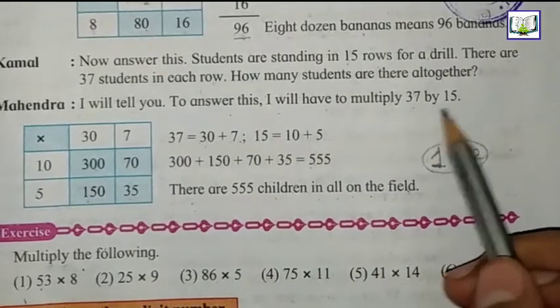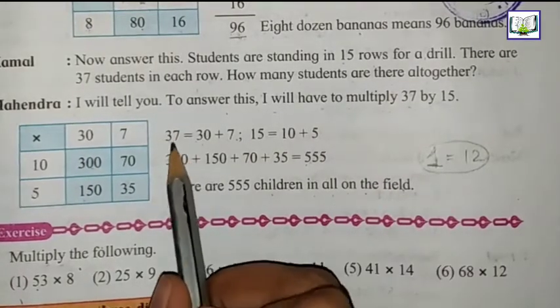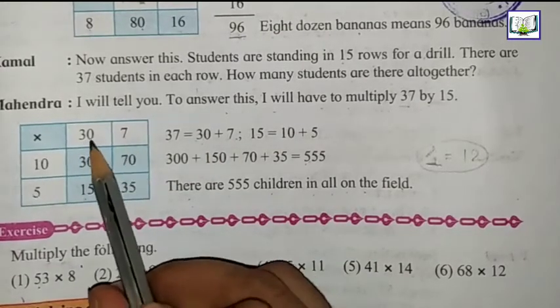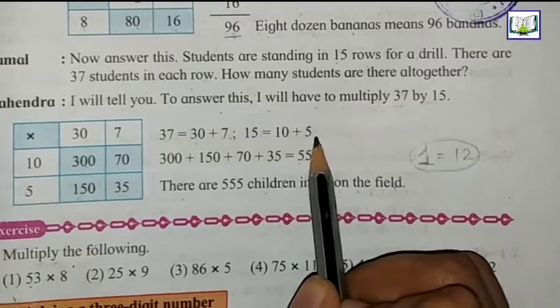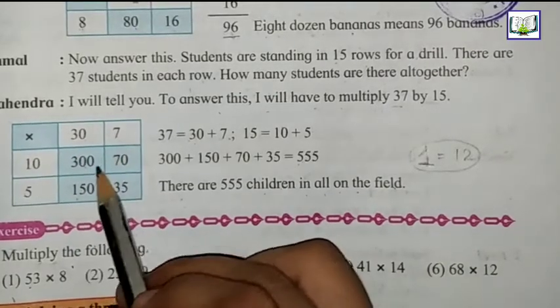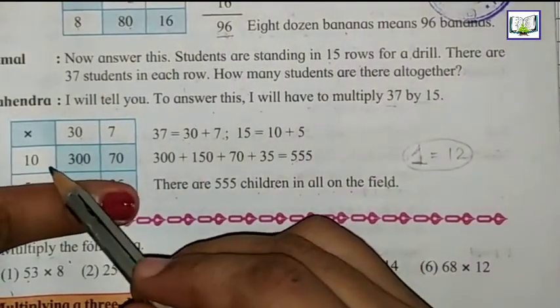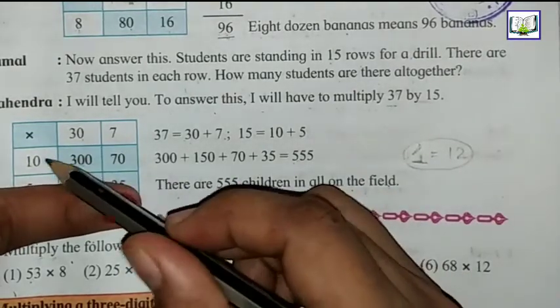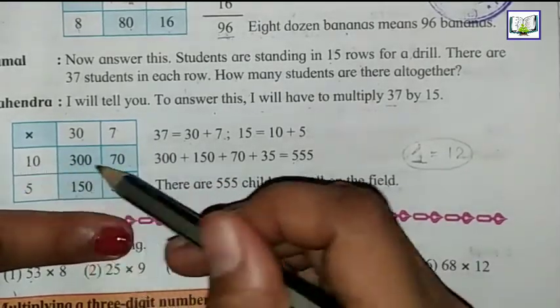We have to break this. 37 equals 30 plus 7, and 15 equals 10 plus 5. Here we have 30 and 7, and here 10 and 5. We have to multiply by 10 first.